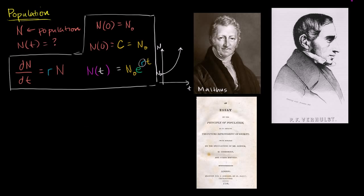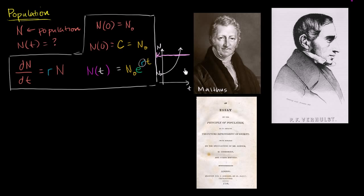Now we said there's an issue there. What if Thomas Malthus is right — that the environment can't support more than a population of K? Then clearly the population can't just go right through the ceiling. They're not going to be able to have food, water, or resources, or whatever it might be. They might generate too much pollution. So this first stab at modeling population doesn't quite do the trick, especially if you are in Malthus's camp.